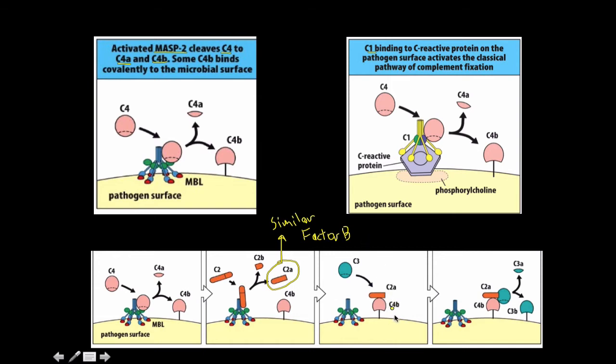And so just like with factor B, when we have, if we were to exchange this right here, say this is C3β, and then factor Bβ, the larger subunit, which C2α is the larger subunit, what is that? Well, that's the alternative C3 convertase.